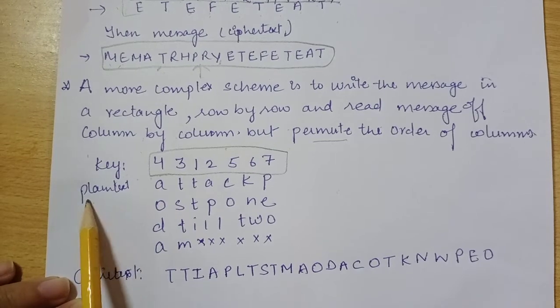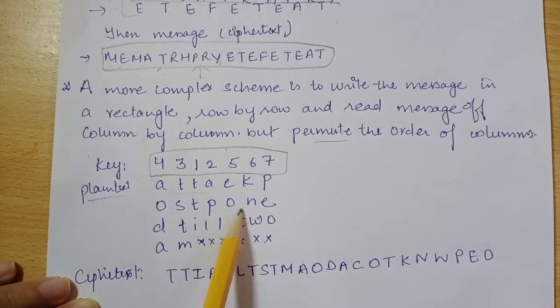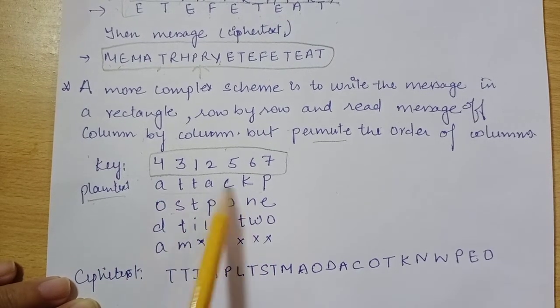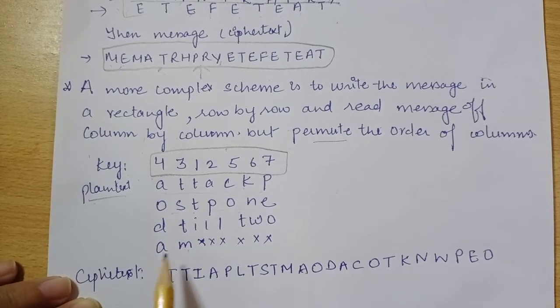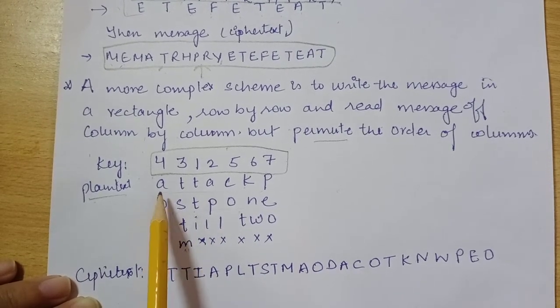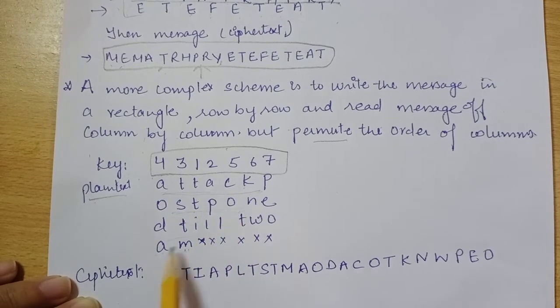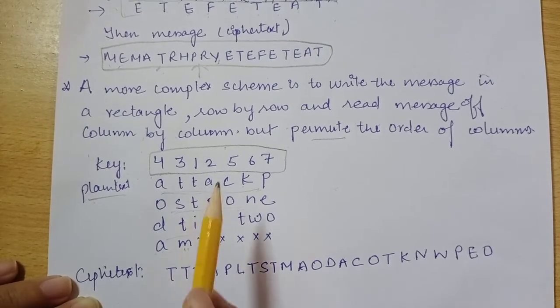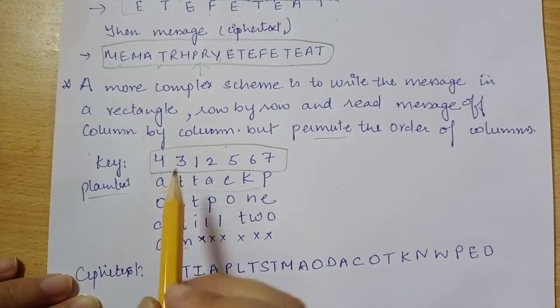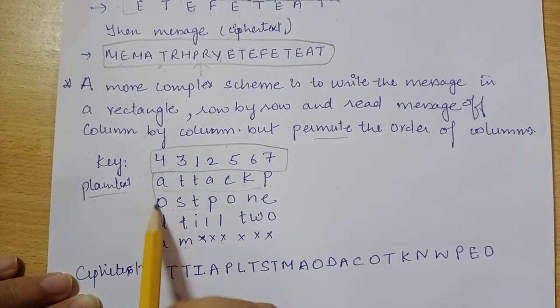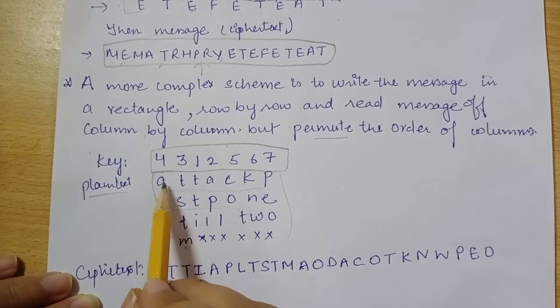And plain text is written row by row - that means 'attack postponed till 2 am', that is our original message. Let's say that is the plain text: 'attack is postponed till 2 am'. Now we will do encryption using transposition method. In this case we'll write in a rectangle rows and columns, we'll write row by row and we'll read column by column.